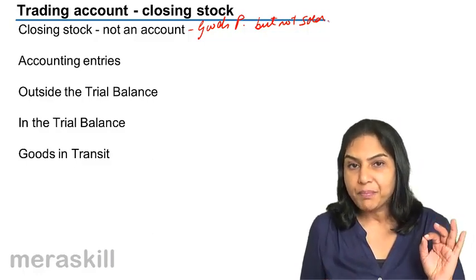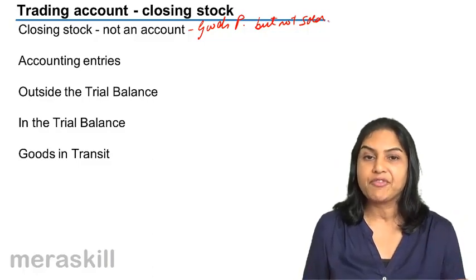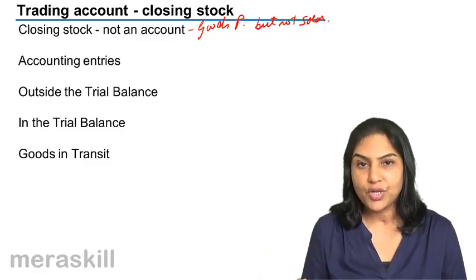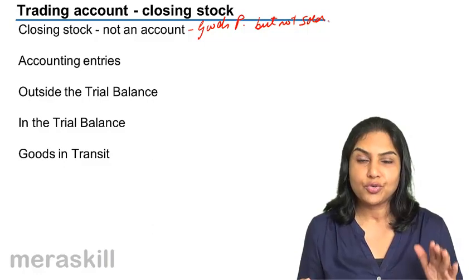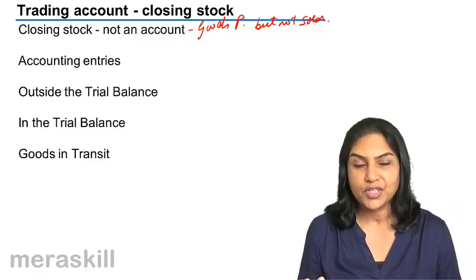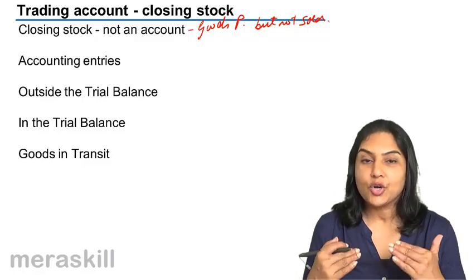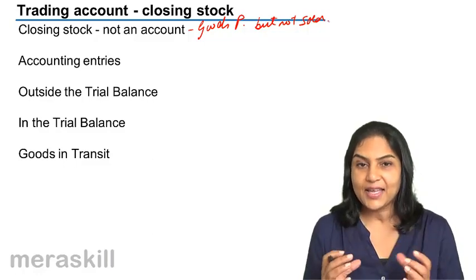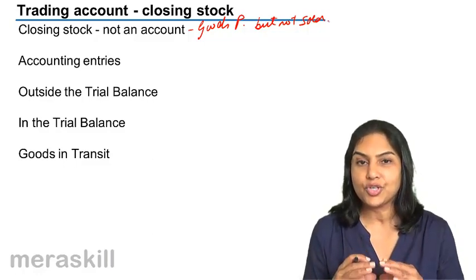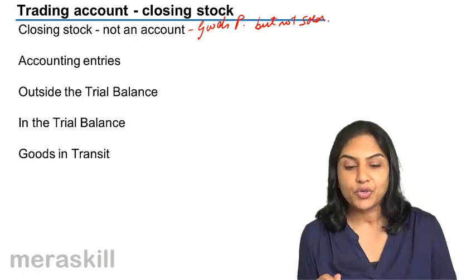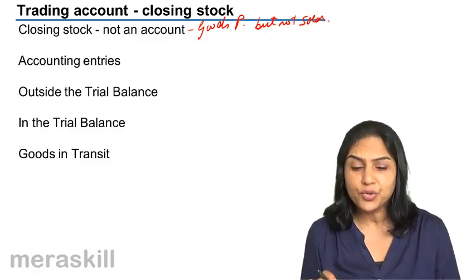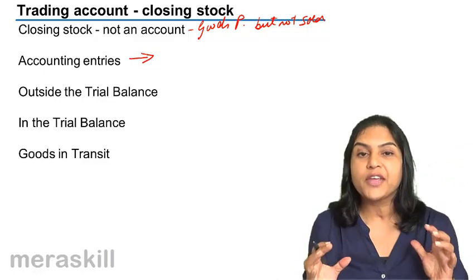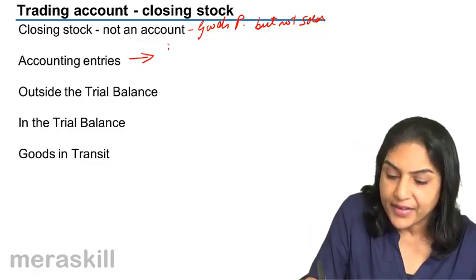We cannot compare 5000 units purchased with 4000 units sold. If 4000 units are sold, the cost of those 4000 units sold is the purchase cost of only 4000 units. The remaining 1000 units is closing stock and cannot be included as part of the cost, but its cost is included in the amount of purchases. So at the year end, we pass an accounting entry for the amount of closing stock.